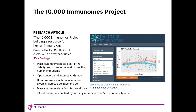The next few papers utilized mass cytometry for immune monitoring and profiling. Mass cytometry was selected as one of 10 data types to create data sets of healthy human immunomes in the 10,000 Immunomes Project. This will be an open-source and interactive dataset and a broad reference of human immune diversity across age, race, and sex. Mass cytometry data was collected from nine clinical trials and 24 cell subsets were quantified in over 500 normal subjects.